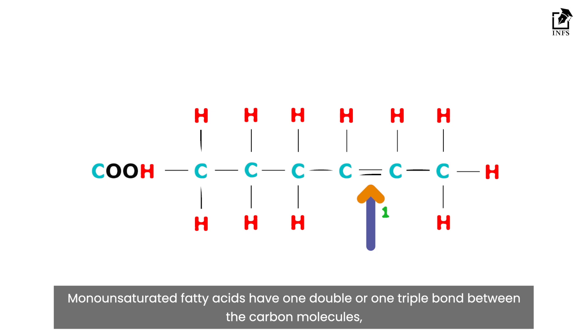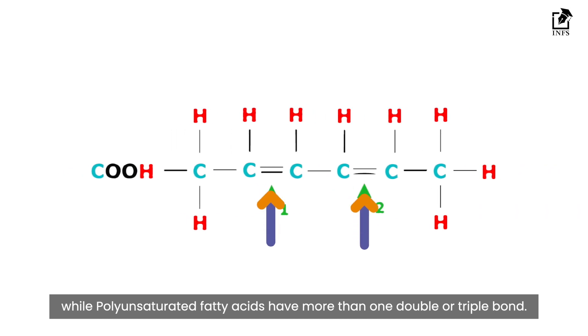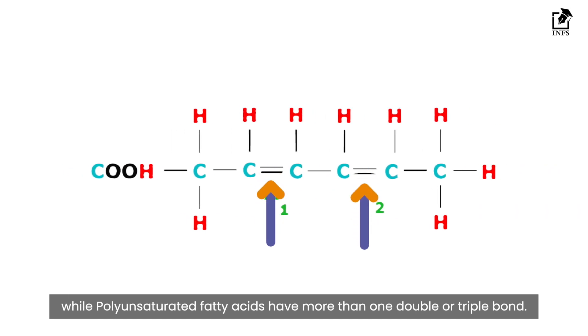Monounsaturated fatty acids have one double or one triple bond between the carbon molecules, while polyunsaturated fatty acids have more than one double or triple bond.